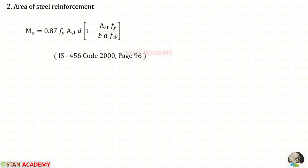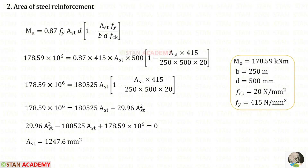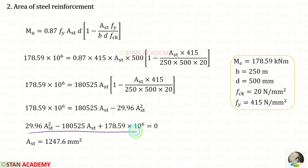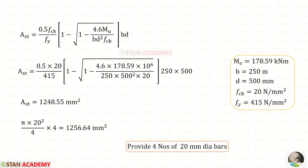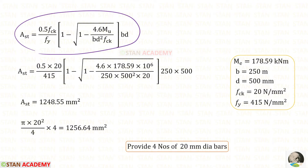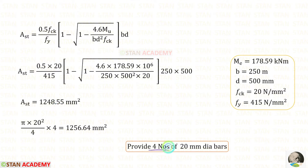Now we are going to find the area of steel reinforcement. In the code book from page 96, we copy the formula. In the formula, instead of Mu, we have to apply Me in Newton millimeter, so we multiply by 10 to the power 6. Solving using a calculator, for AST we get the required value. Alternatively, we can find AST directly using a memorized formula — after applying all values, we get the AST. Let us provide four numbers of 20 millimeter diameter bars, so the provided AST will be 1256.64 millimeter square, which is more than the required AST.